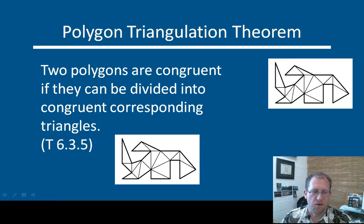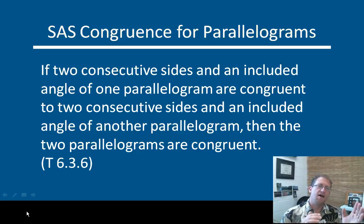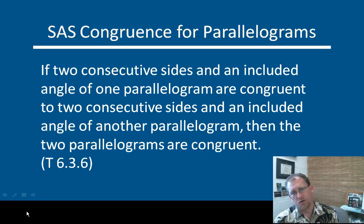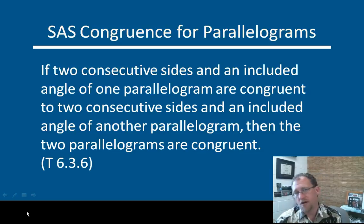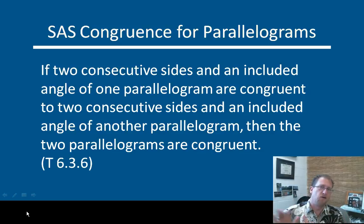Parallelograms can be demonstrated to be congruent through side-angle-side as well. If you want to show that two parallelograms are congruent to each other, you need to demonstrate side-angle-side — that two consecutive sides and the included angle between them are congruent in the two parallelograms. If you can do that, then you have congruent parallelograms. You have to already know that they're parallelograms, otherwise this won't work. If you just have two quadrilaterals, side-angle-side doesn't prove that they're congruent. But if you know that they're parallelograms, then side-angle-side works for parallelograms just like it works for triangles.